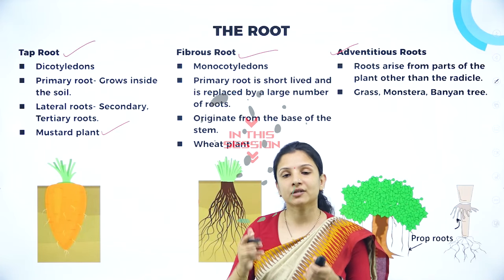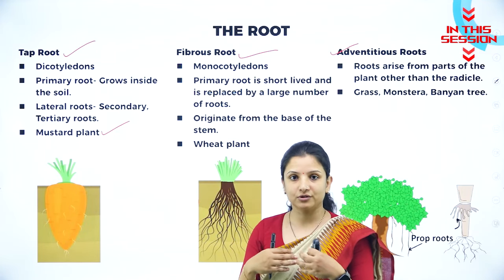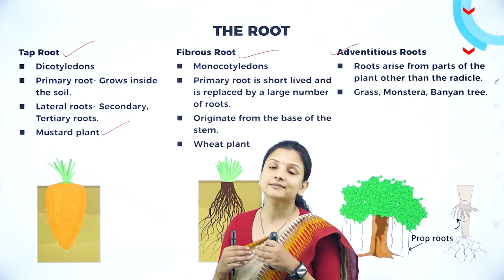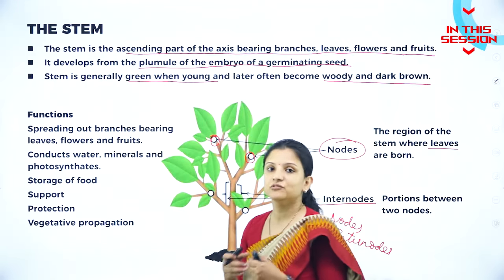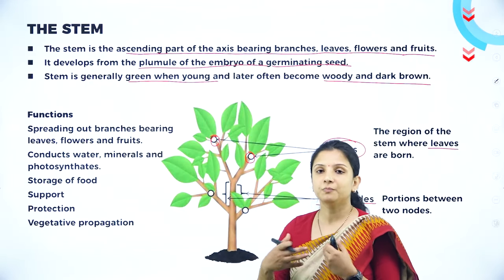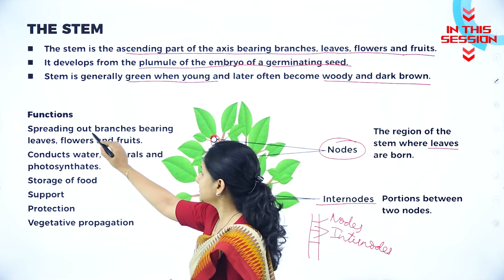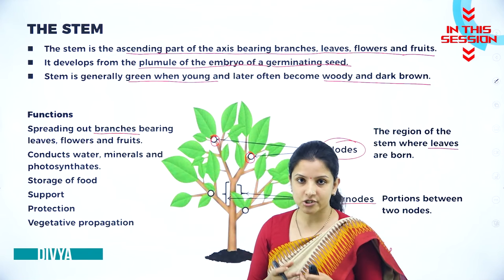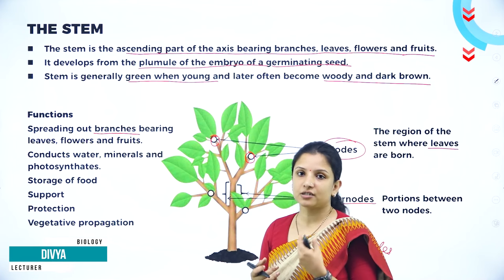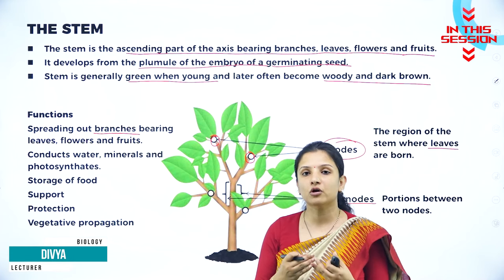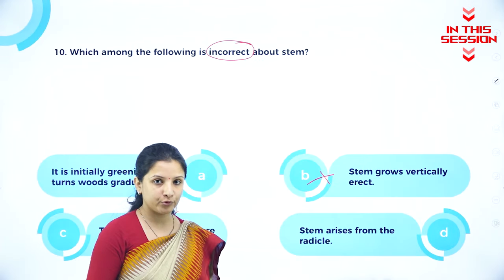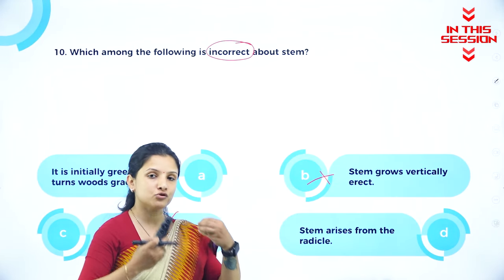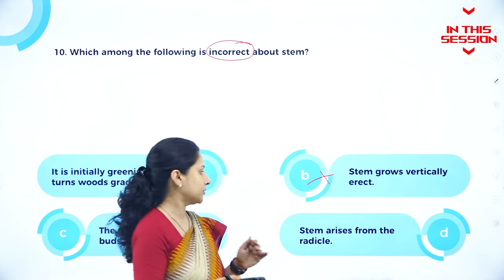In taproot, we have three types of roots: primary root, secondary root, and tertiary root, also called lateral root. Stems usually help plants to spread out branches and bear leaves, flowers, and fruits, which are very important for plants to complete their life cycle. The stem arises from the plumule, which develops the shoot, and that shoot forms the stem.